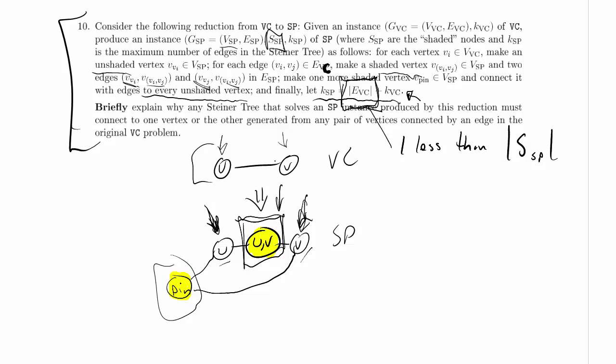So why does it have to connect to one vertex or the other generated from any pair of vertices connected by an edge in the original vertex cover problem? Because otherwise,